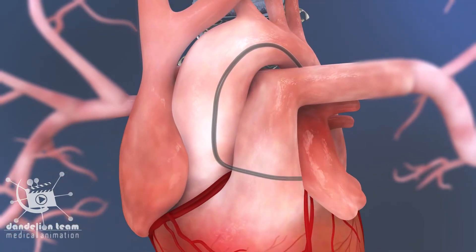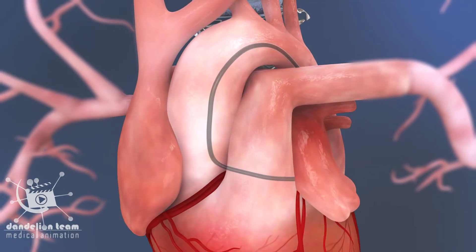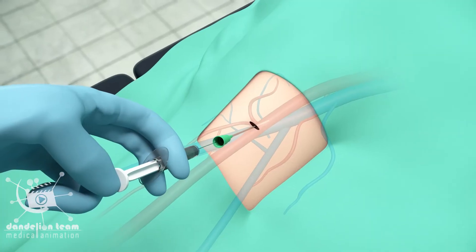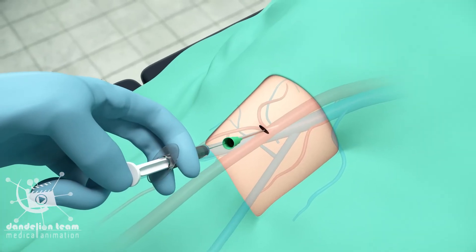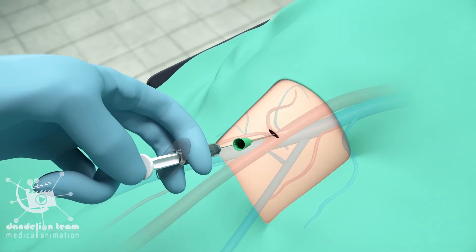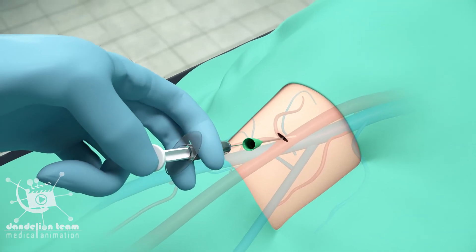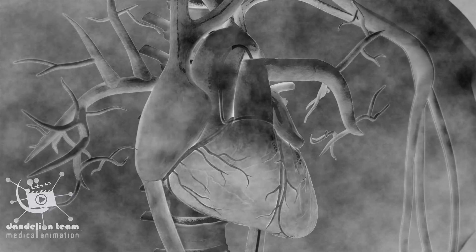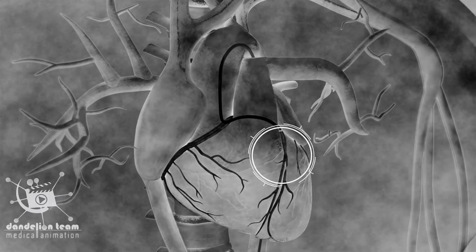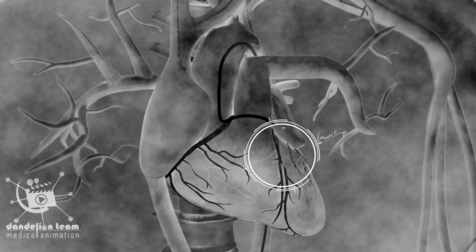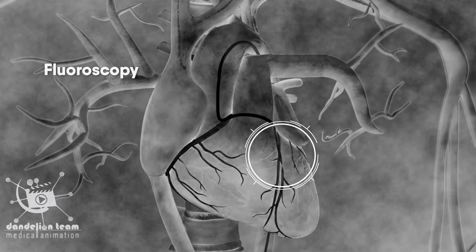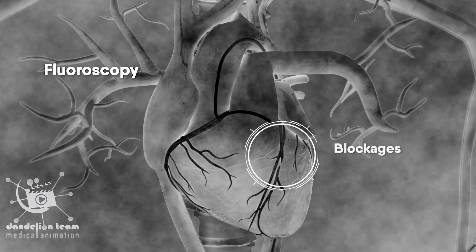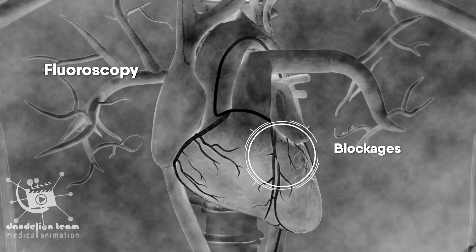The guide wire will be removed and a contrast dye will be injected through the tube. This special dye makes it possible for the x-ray device, called fluoroscopy, to identify the blockages in the artery.